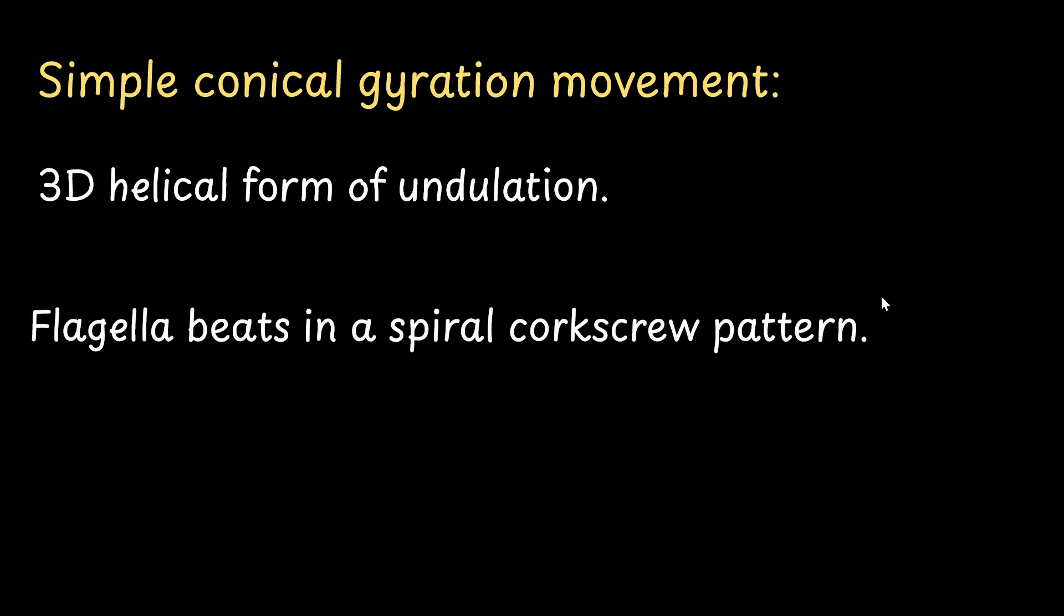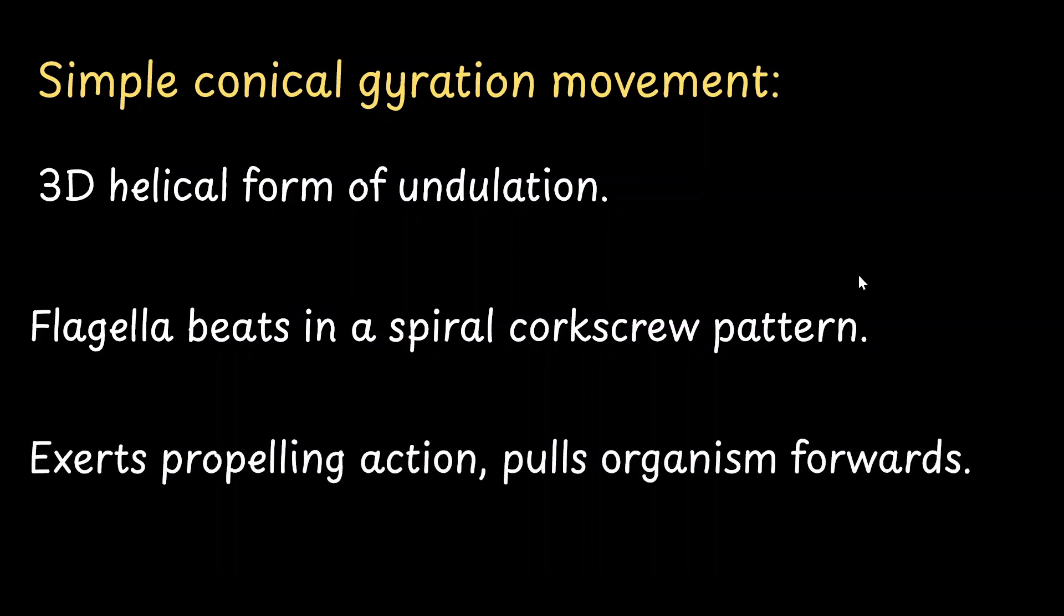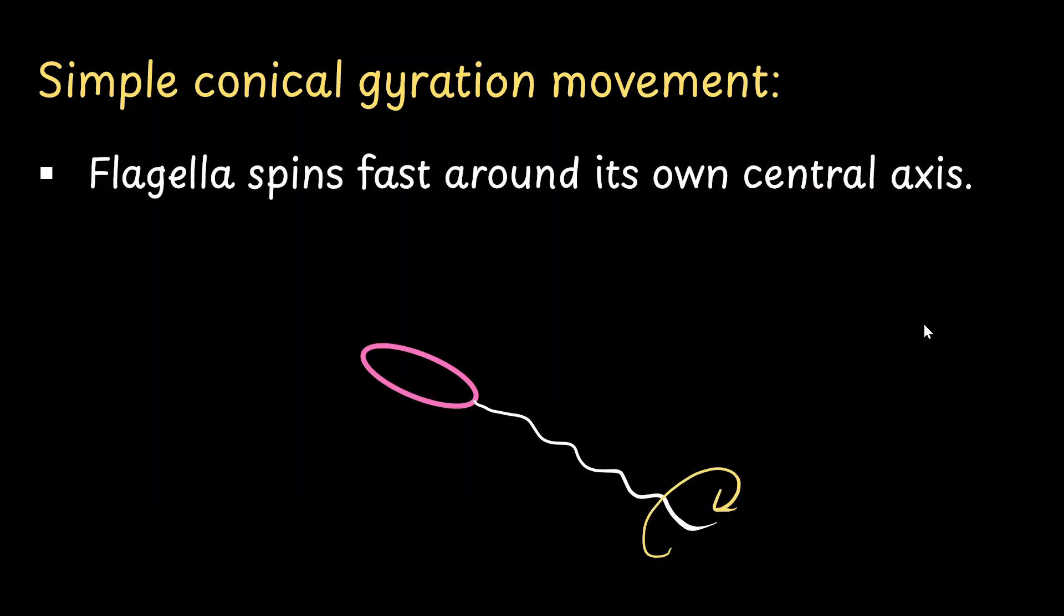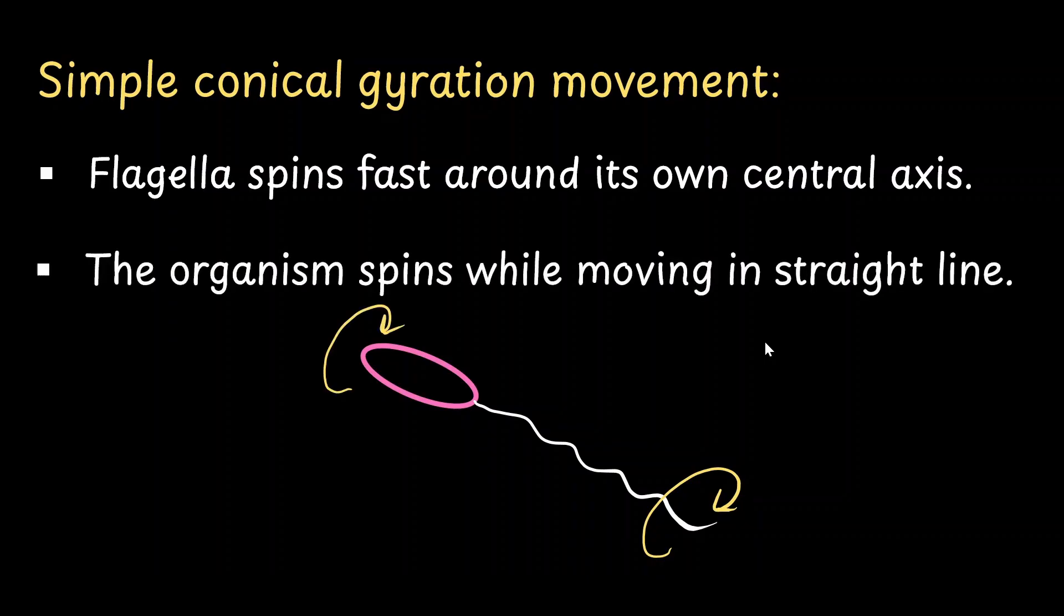The second type of undulating movement is called a simple conical gyration movement. This is considered to be a 3D form of undulation, meaning the flagella can move left, right, as well as top and bottom, almost in a circular manner. The flagella beats in a spiral corkscrew pattern, and through this movement, it exerts a pulling force on the organism, and the organism starts moving forward. During the gyration movement of the flagella, two things can be noticed. First is that the flagella spins fast around its own central axis. This is the primary movement causing the locomotion of the organism. The second is that the organism itself is going to spin on its own axis while it is moving forward in a straight line.